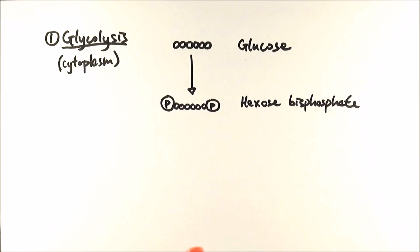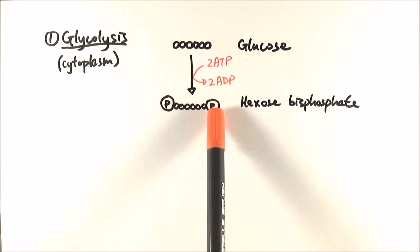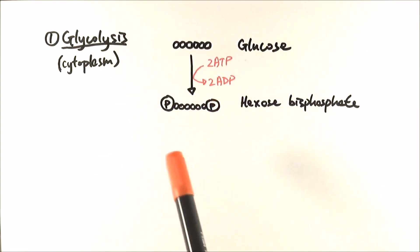In the first step of glycolysis, glucose gets two phosphate groups donated from two ATPs to become hexose bisphosphate. In this process, the two ATP becomes ADP—triphosphate becoming diphosphate—and the two phosphate groups have been transferred onto it.